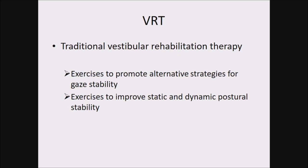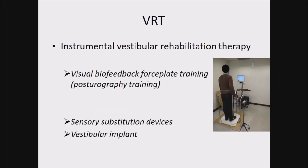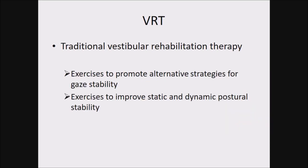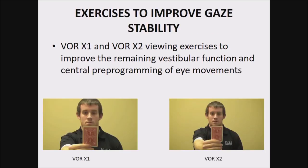There are traditional methods of VRT which can be done in a clinic setup with basic instruments, and there are modern methods using visual biofeedback and sensory substitution devices. We are also talking about vestibular implants. Traditional vestibular rehabilitation therapy involves exercises to promote alternative strategies for gaze stability and exercises to improve static and dynamic postural stability, since the main deficits are gaze instability and postural problems.